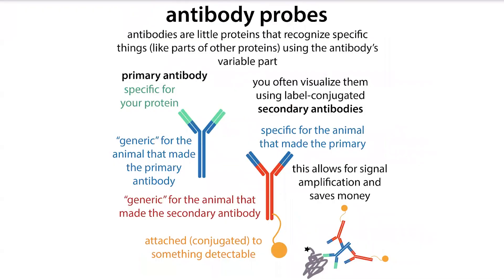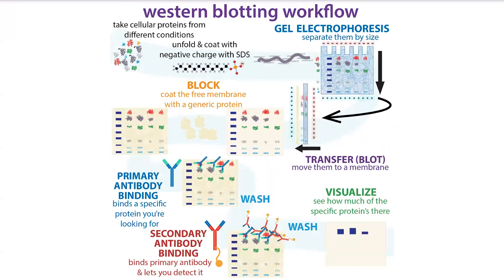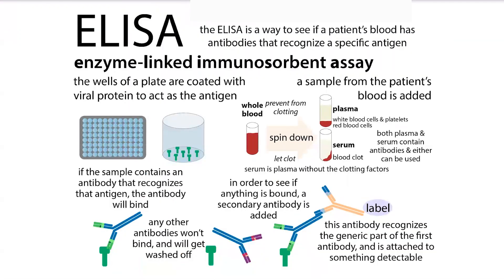We use antibodies in the lab as probes — basically molecules that are going to allow us to detect the presence of specific other molecules. These other molecules are often proteins, such as in the case of a western blot, or they can also be proteins or other molecules in blood, such as from the presence of a virus. So if a virus is in you and it makes a certain protein, then a test called an ELISA, for example, can use antibodies to detect that specific protein in the blood.